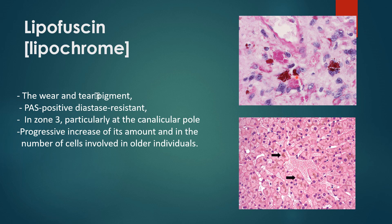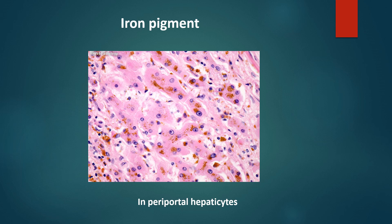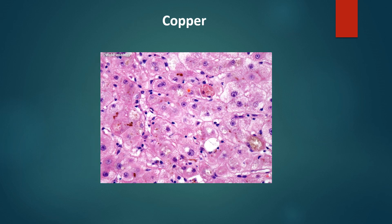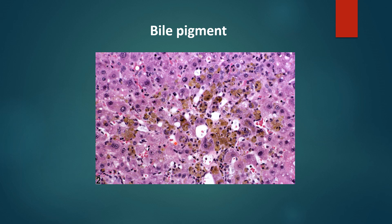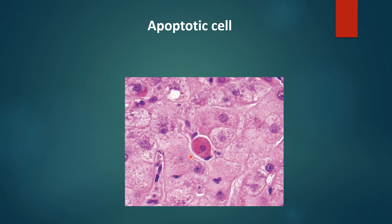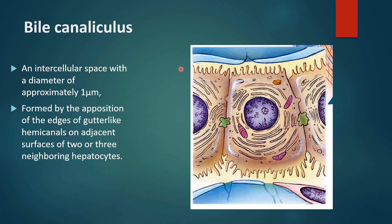Lipofuscin deposits increase with age and are considered the wear-and-tear pigment of the cell. A special iron stain is used to demonstrate iron present in periportal hepatocytes, and a special stain is also used for copper present in hepatocytes. Special staining for bile shows bile present within cells. An apoptotic cell also called the Councilman body is also present — this is a type of apoptotic cell and may appear as an MCQ.